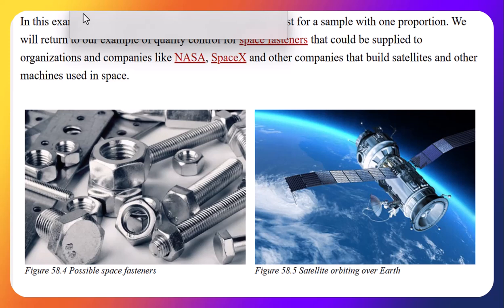So what we're going to look at are space fasteners. There is a lot of quality control testing performed on them. Simple things like nuts, bolts, all of those things that need to be used on satellites, rockets, everything like that.